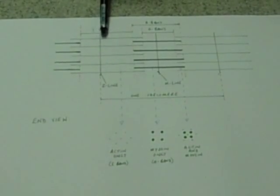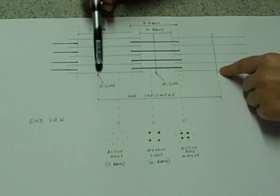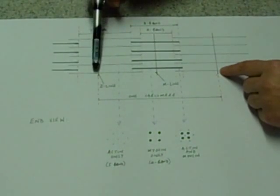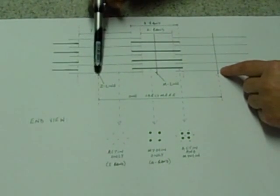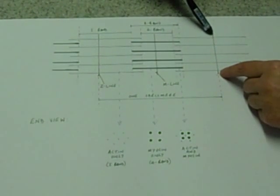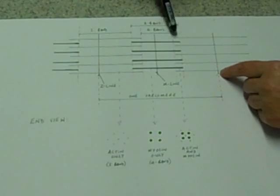myofibrils are very long and they're divided into what we call a functional unit called a sarcomere. Again, we've got that word sarco meaning muscle. A sarcomere runs between a Z line and a Z line and these are the structures that the actin filaments, thin filaments, are attached to.